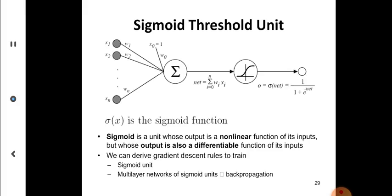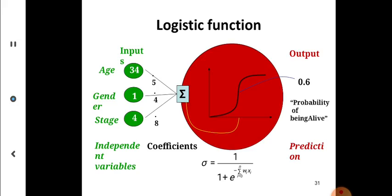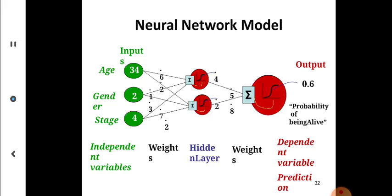These are multiple neural network examples. Sigmoid threshold unit means you are applying a sigmoid function. Sigmoid is a unit whose output is a non-linear function. This is the logistic function we apply. Here's a neural network model example scenario. I am giving input: age, gender and stage. These are independent variables. Then I have weights, random weights I assign. I have two hidden layers, then another set of weights. Finally, the output is a sigmoid function, the dependent variable. There is a back propagation algorithm going to come back from forward to reverse to adjust the weights.